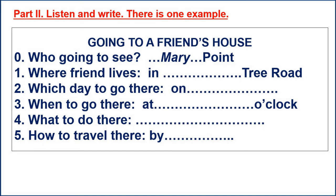Three. When can you go there? After school — at four o'clock. No, sorry, she said five o'clock. At five o'clock. Alright, great. Four. What do you both want to do there? We want to swim, dad. At her house? Yes, we can swim in their pool — they've got one in their garden. Wow.